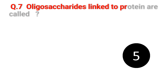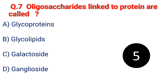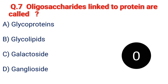Question 7. Oligosaccharides linked to protein are called: A. Glycoprotein. B. Glycolipids. C. Galactoside. D. Ganglioside. The answer is A. Glycoprotein.